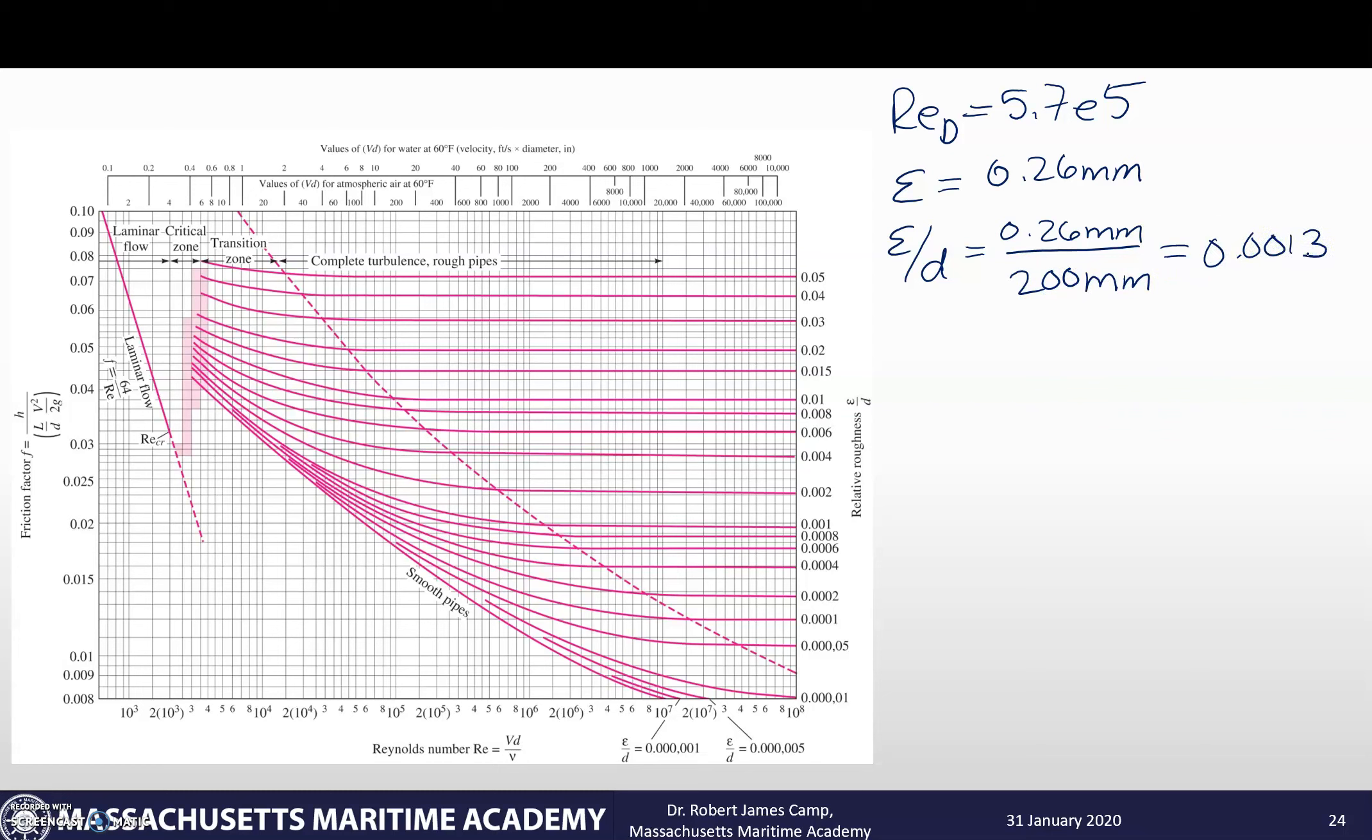So as we take a look at this, let's find 5.7 e to the 5, which is going to be somewhere right in here, right between the 5 and the 6. I get 0.0013, which is going to give me, let's see, two zeros, one, three, somewhere right in there, right on top of that line. So if I look at it, I should be coming in just about right there. So I have an f value of basically 0.021.